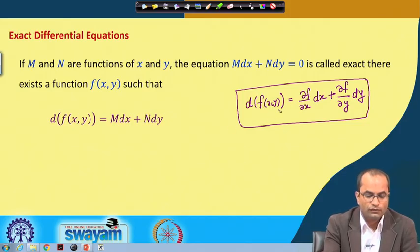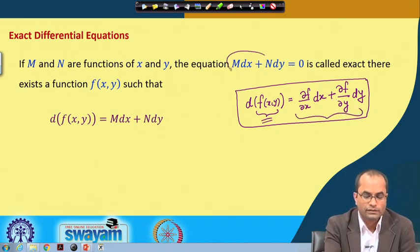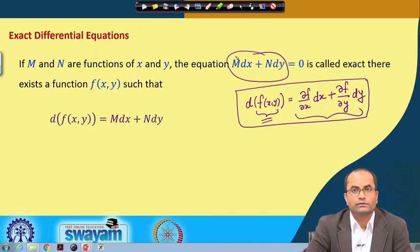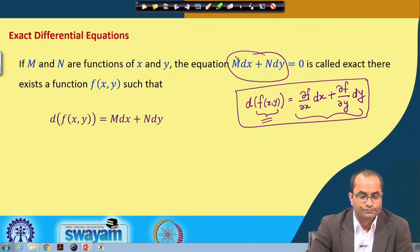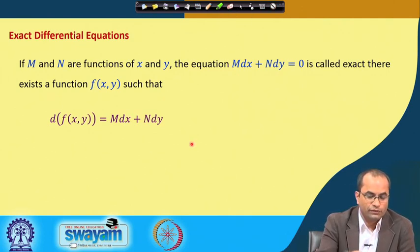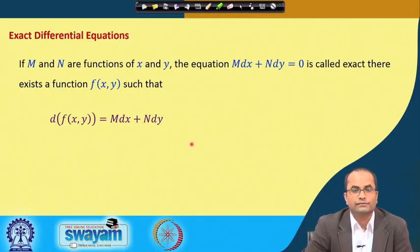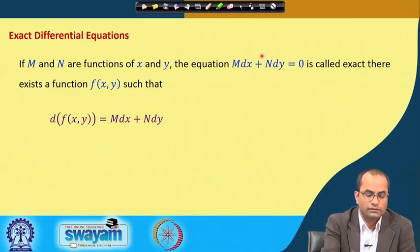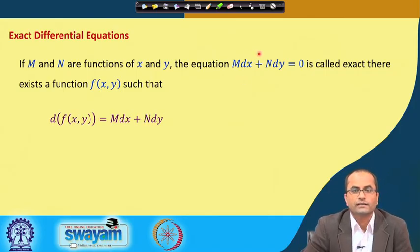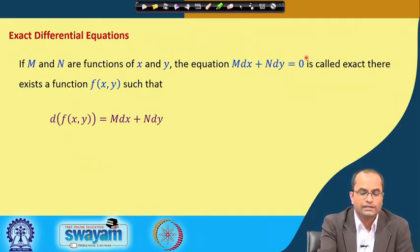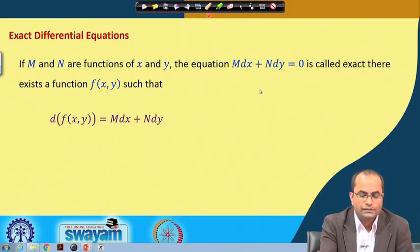We are looking for a function f whose differential is exactly this differential equation — or rather its left-hand side. We call this differential equation exact because it is exactly the differential of some function. Once we find such a function, integration is easy: we have df = 0, and the solution is f equals a constant.